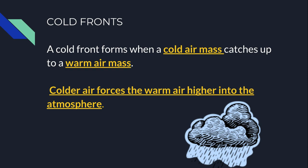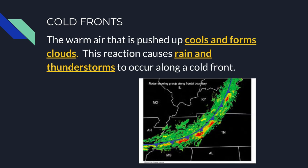That's because cold air is more dense — cold is more dense, warm is less dense — so warm air is going to want to rise above the cold air. The warm air that is pushed up cools and forms clouds, and this reaction causes rain and thunderstorms to occur along a cold front. On a weather map you may notice strong bands of thunderstorms moving in a single line — that's generally the result of a cold front.